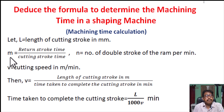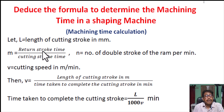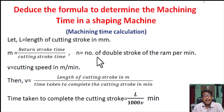Let M equal to return stroke time divided by cutting stroke time. Cutting stroke time means forward stroke time, and return stroke time means backward stroke time. Let N equal to number of double strokes of the ram per minute.